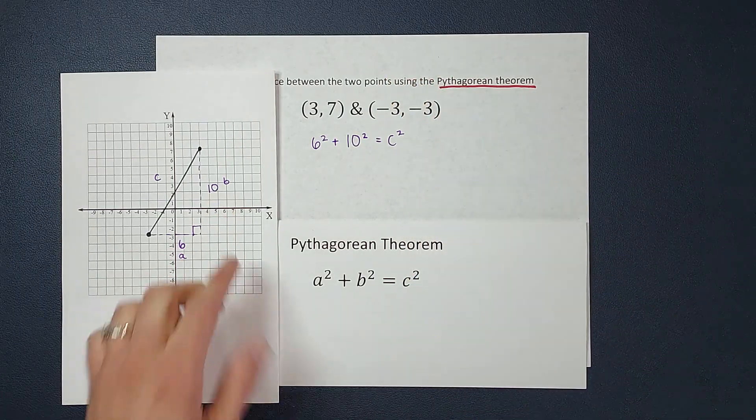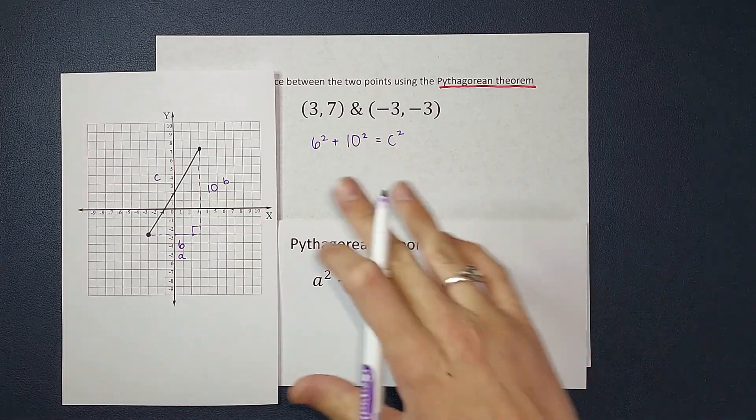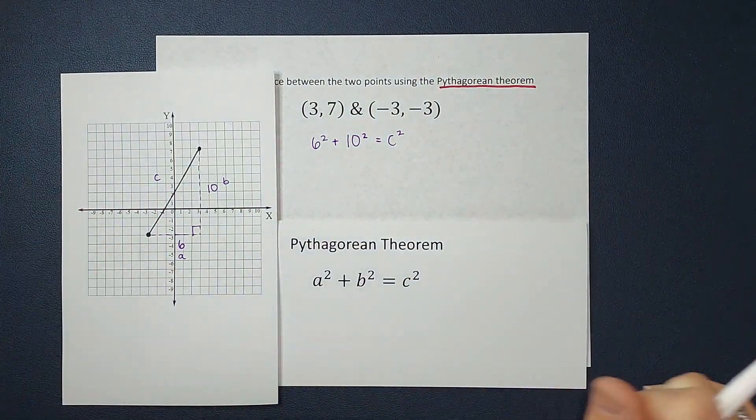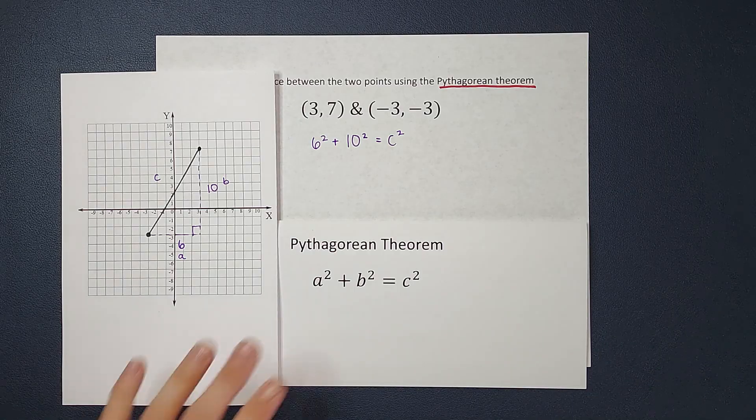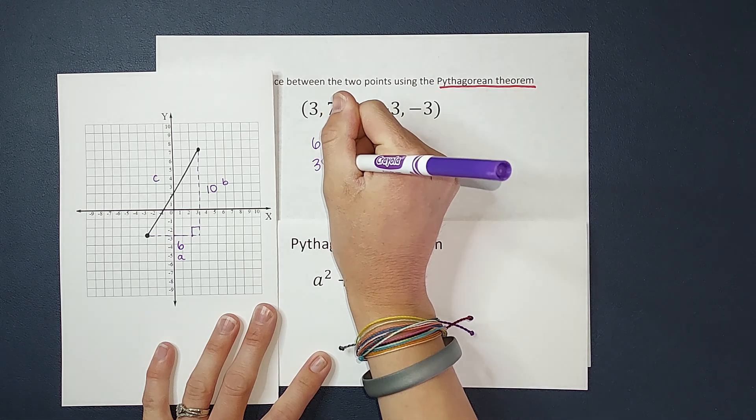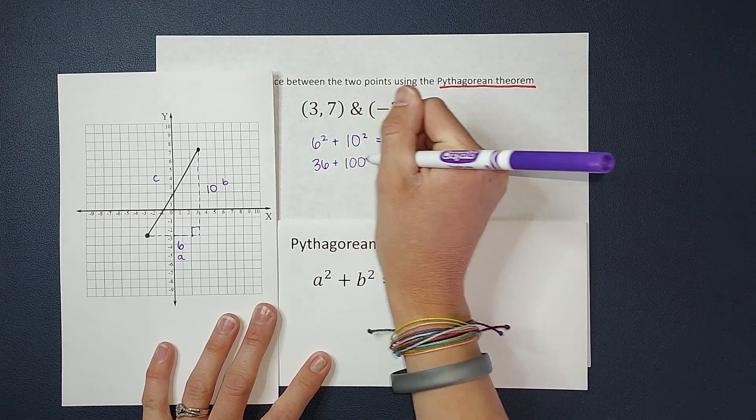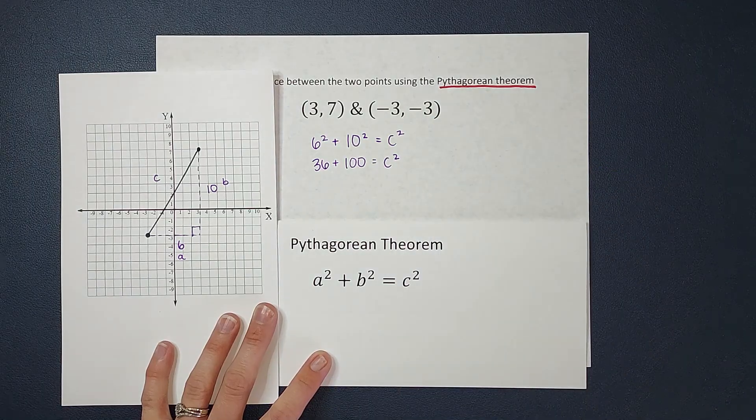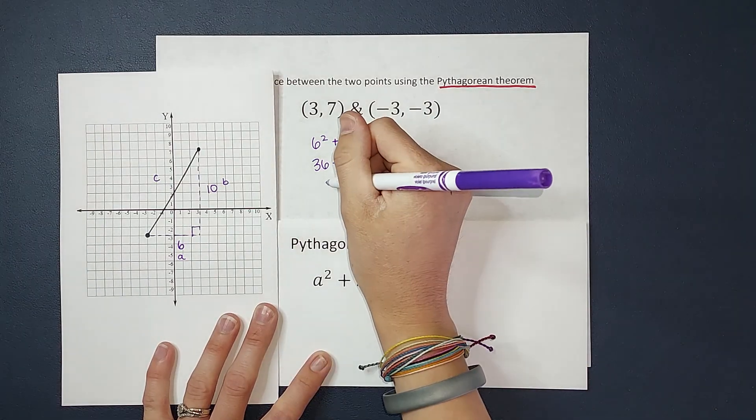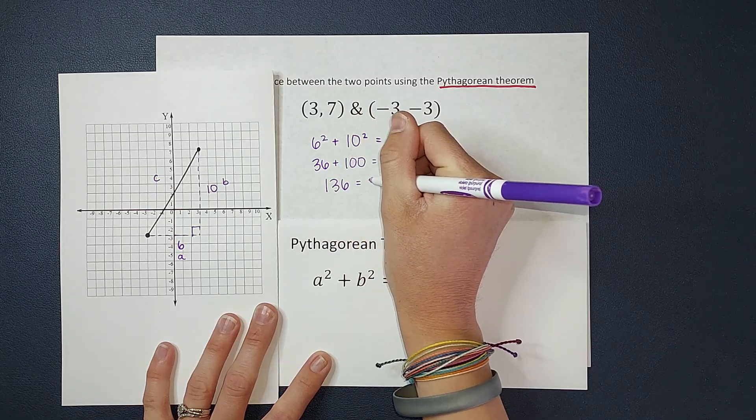Now, if you had done 10² + 6², just flipped them, you're going to get the same answer. So don't worry if you flipped those. So 6² gives me 36, and 10² gives me 100. This is still equal to c². When I add those, I get 136 = c².